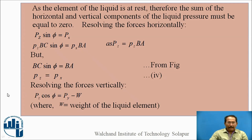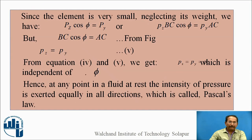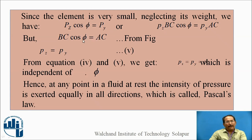Similarly, resolving the forces vertically: pz cos theta equals py minus W, where W is the weight of the liquid element. Since the element is very small, neglecting its weight, we get pz cos theta equals py, or pz times BC cos theta equals py times AC. From the geometry of the figure, BC cos theta equals AC, so cancelling the sides gives pz equals py.